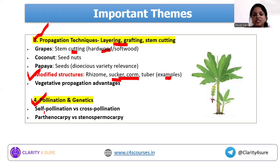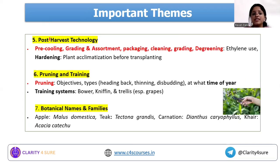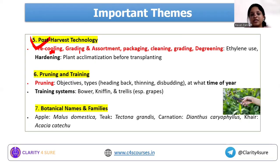Next is pollination and genetics. There are questions on pollination, so have at least a basic understanding of self-pollination, cross-pollination, and parthenocarpy. Under post harvest technology, different concepts like pre-cooling, grading, packaging, cleaning, and degaining are important and have appeared in questions.